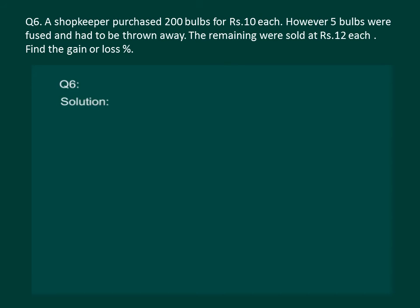Let's solve another example. A shopkeeper purchased 200 bulbs for rupees 10 each; however, five bulbs were fused and had to be thrown away. The remaining were sold at rupees 12 each. Find the gain or loss percent. First, the cost price of 200 bulbs: CP equals rupees 10 multiplied by 200, which equals rupees 2000.